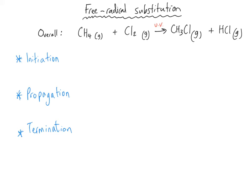This reaction involves three steps that happen one after the other. The first step is initiation — to initiate means to start something. The second step is propagation, meaning to spread the reaction on and keep it going. And termination is the ending of the process. This type of reaction is often referred to as a chain reaction, because once the ultraviolet light has initiated the process, it leads on to propagation and termination without us having to do anything else.